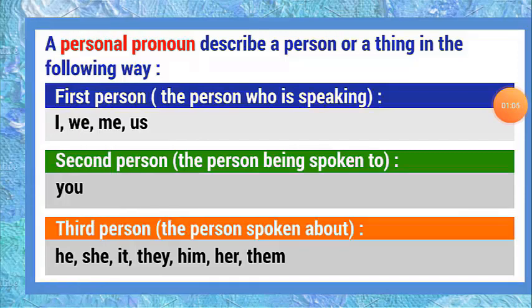Personal pronouns describe a person or a thing in the following way. First person — the person who is speaking. Examples: I, we, me, us. Second person — the person being spoken to. Example: you. Third person — the person spoken about. Examples: he, she, it, they, him, her, them.